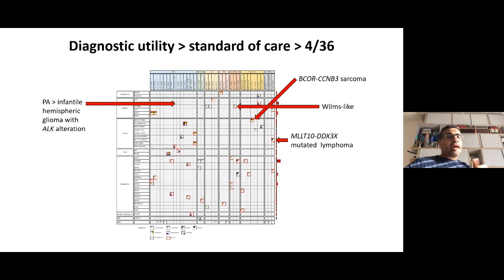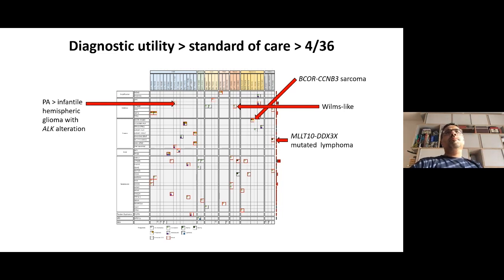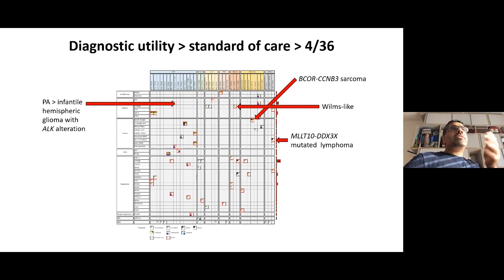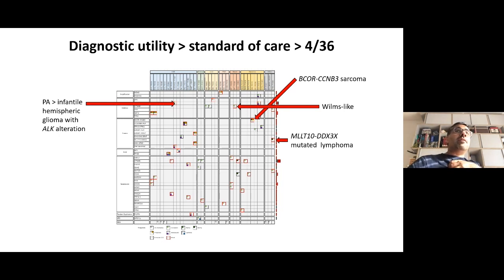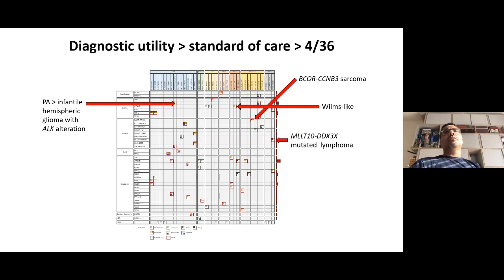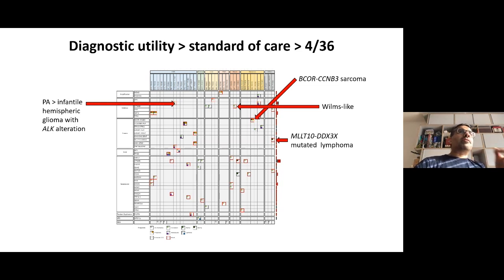Looking at the diagnostic utility in four cases: we deal with a lot of really strange entities that we can't define well, and whole genome sequencing pops up interesting things. On the left, you can see an infant thought to have a pilocytic astrocytoma, but it turned out to be a very strange tumour with an ALK alteration — important because ALK is targetable. Top right, a child with an undefinable sarcoma who had done extremely well — retrospectively this was because they had a BCOR rearrangement, and those children are known to do well. There was also a child with an undefinable renal tumour where our analysis suggested a Wilms-like entity. And in lymphomas it's been a repeated experience that we seem to be learning a lot about subclassification.